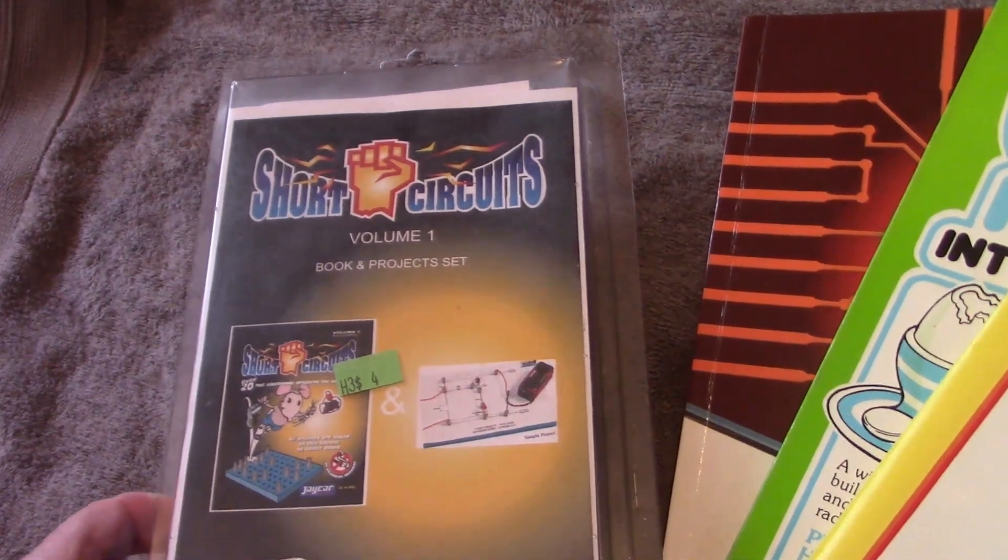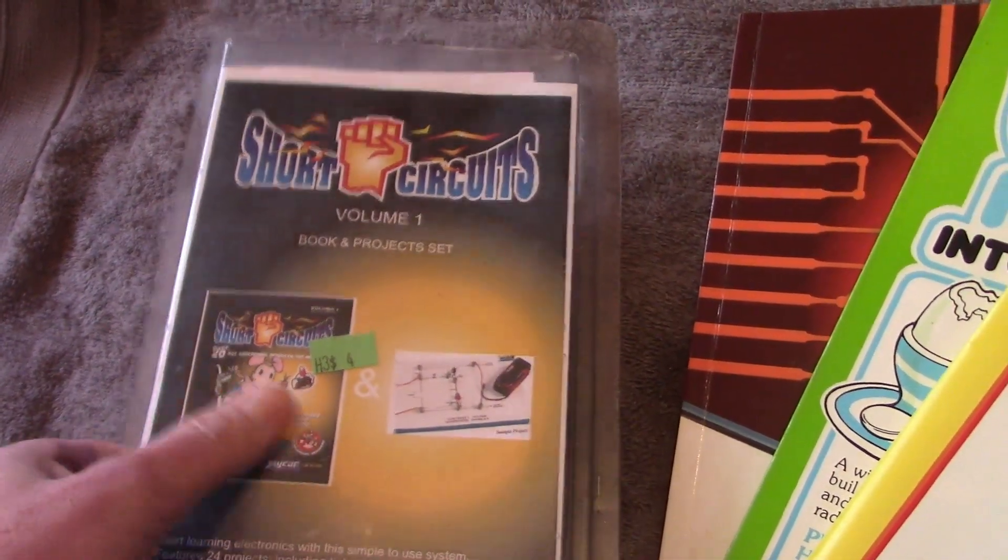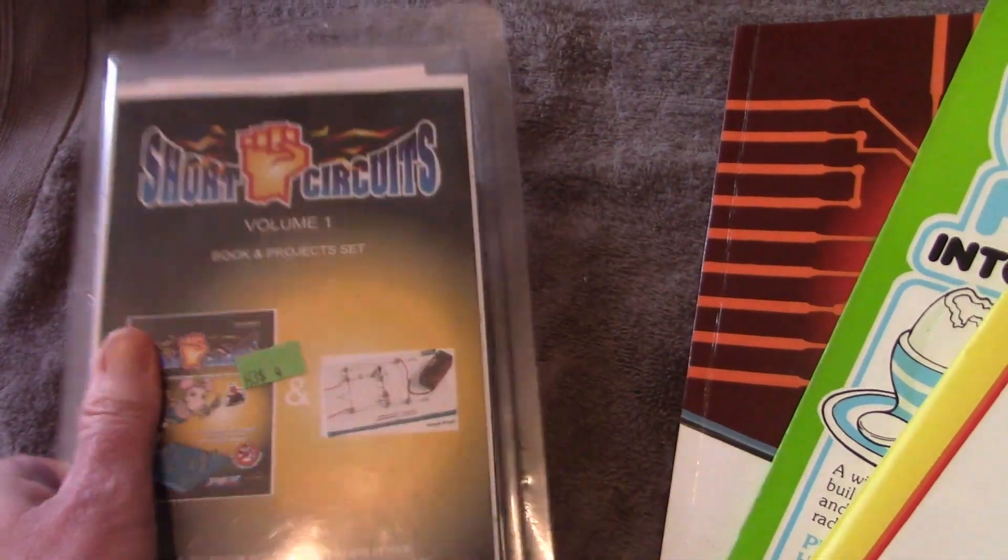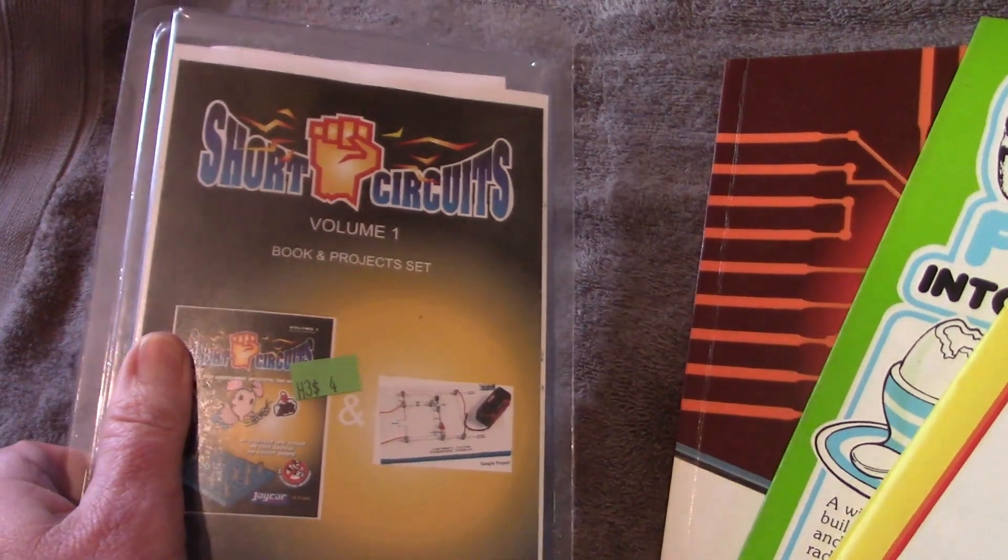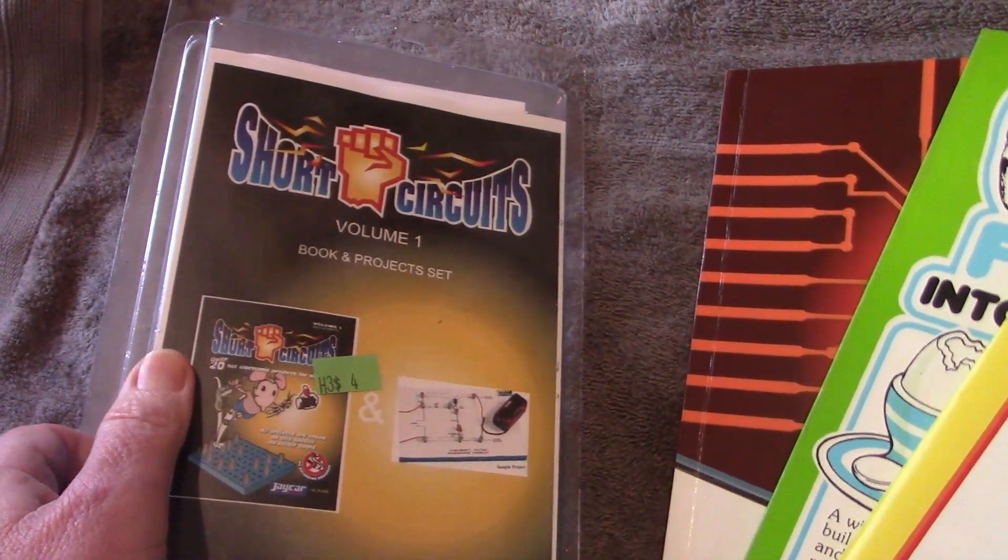Found in a local charity shop for just four dollars was this kit set from J-Car called Short Circuits. It's intended as a beginners course in electronics.